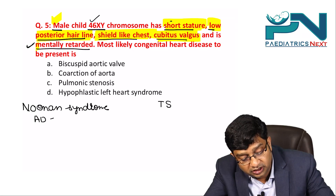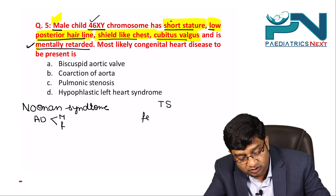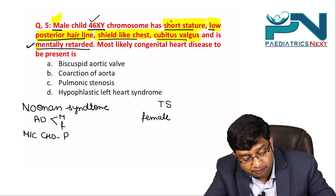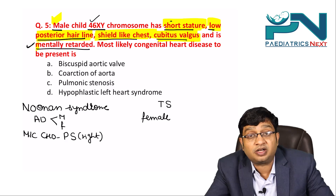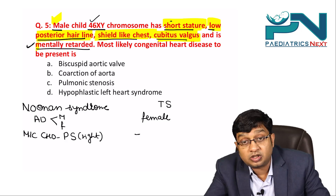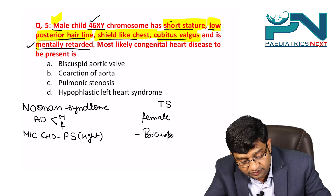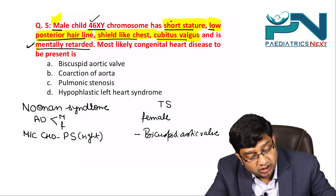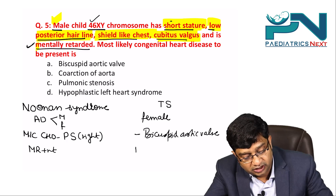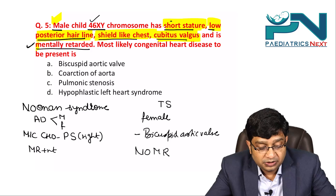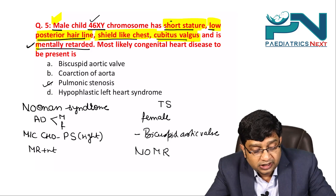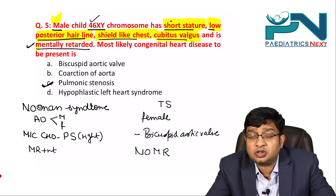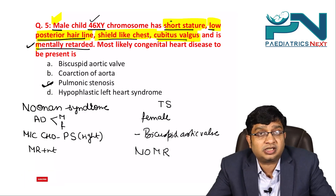Noonan syndrome is autosomal dominant and can affect males or females, unlike Turner syndrome which is always female. The most common congenital heart disease in Noonan syndrome is pulmonary stenosis (right-sided), whereas in Turner syndrome it is bicuspid aortic valve disease (left-sided). Additionally, Noonan syndrome involves mental retardation while Turner does not. Therefore, the answer is pulmonary stenosis. Always pick up the key clues when solving MCQs.